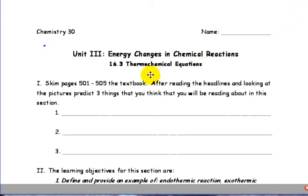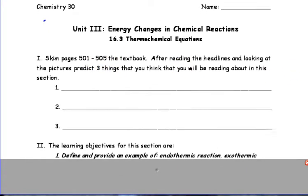Welcome back to Chemistry 30. This is the 16.3 Thermochemical Equations booklet. It corresponds to page 501 to 505 of the text.